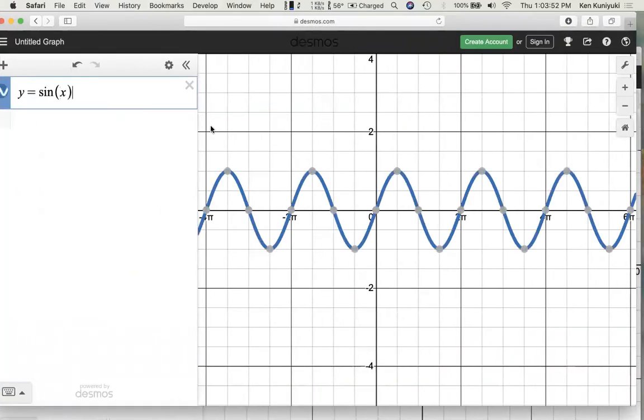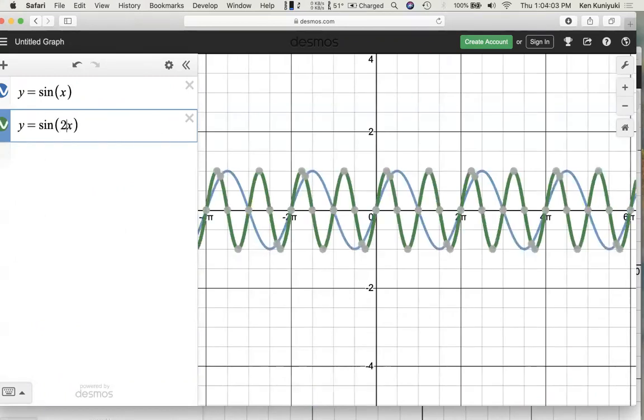Here's y equals sine of x, classic sine wave. What happens with y equals sine of 2x? What happens if we put a 2 in front? Going from blue to green, it's a horizontal squeeze. Now again, from chapter 1, 1.4, remember that the horizontal transformations were confusing.